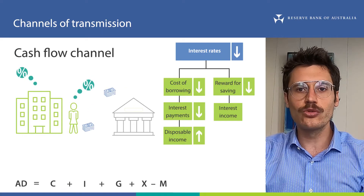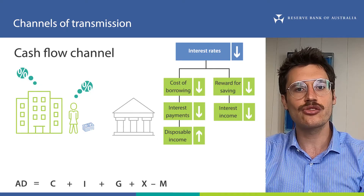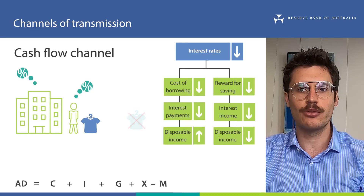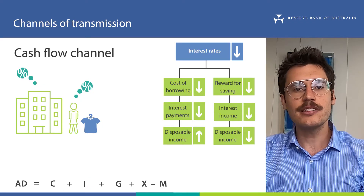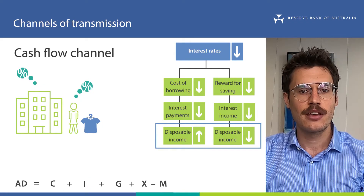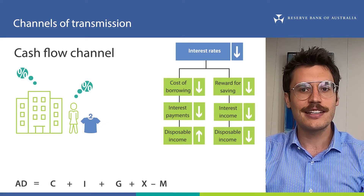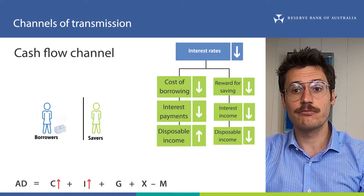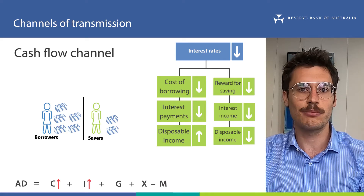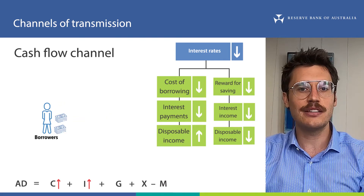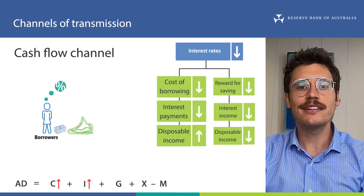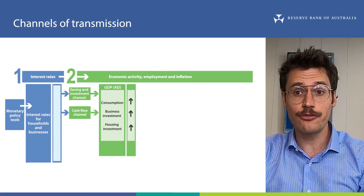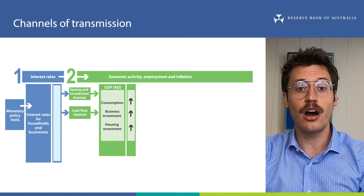However, at the same time, lower deposit rates also reduce the amount of income that households and businesses get from their cash on deposit at the bank. If they rely on this income to pay for goods and services, they may have to reduce their spending in response to lower deposit rates, lowering their consumption and investment. As you can see from the diagram, these two effects work in opposite directions. But across the whole economy, the effect of lower lending rates is larger than the effect of lower deposit rates. This is because Australian households have collectively borrowed more than they have saved into interest-bearing assets such as deposits, and because borrowers are more sensitive to changes in interest rates than savers since loan repayments are more likely to constrain their spending. So the cash flow channel is expected to result in higher consumption and investment spending overall.